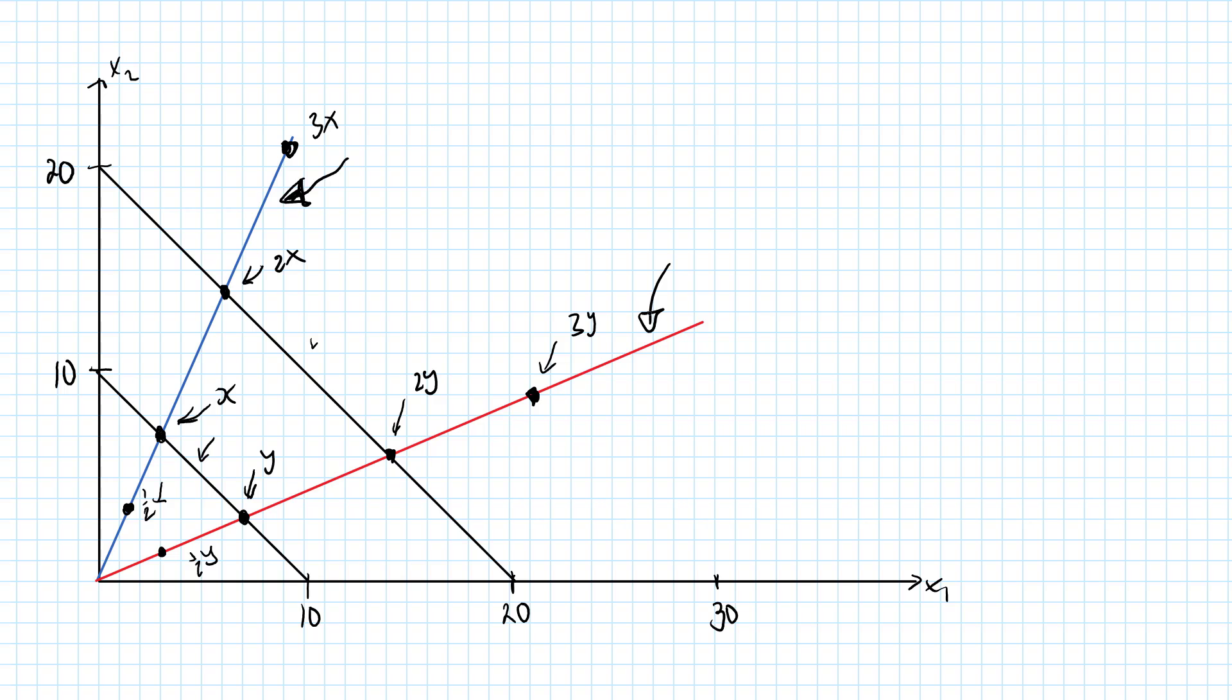That's the geometric, intuitive argument. If you prefer a mathematical argument, then it goes something like this. We know that we can always represent perfect substitutes with a utility function written as a times x1 plus b times x2, where a and b are positive constants.